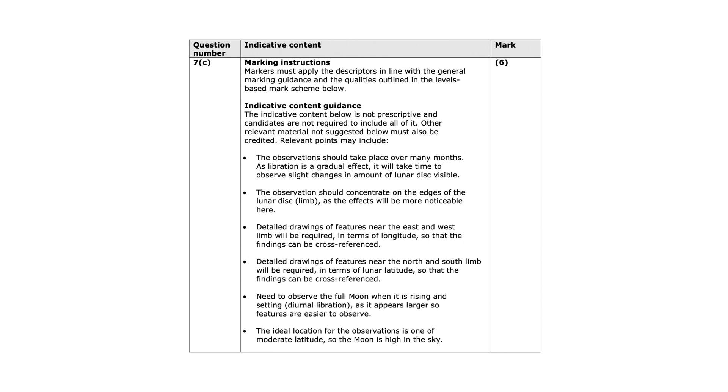So, for a libration in longitude, we're looking at the east and the west limb. And for a libration in latitude, we're looking for the north and the south limb. And we also need to think about when you should observe the moon. So, they're saying you need to observe the full moon when it's rising and setting to see diurnal libration, as it appears larger, so these features are a little bit easier to observe. And we also need to think about where. So, the location is one of a moderate latitude, because you want the moon to be high in the sky. And we want to look at how assessment objectives contribute to this, right?